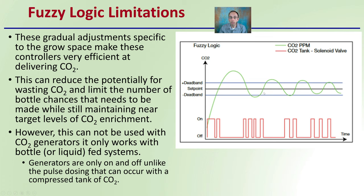What are the limitations of fuzzy logic? These gradual adjustments are specific to the growth space and make these controllers very efficient at delivering carbon dioxide, which is why you typically pay a little bit more for them. This can reduce the potential for wasting carbon dioxide and limit the number of bottle changes needed while still maintaining near-target levels of carbon dioxide enrichment.